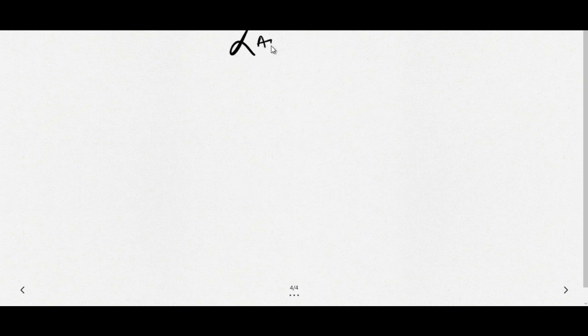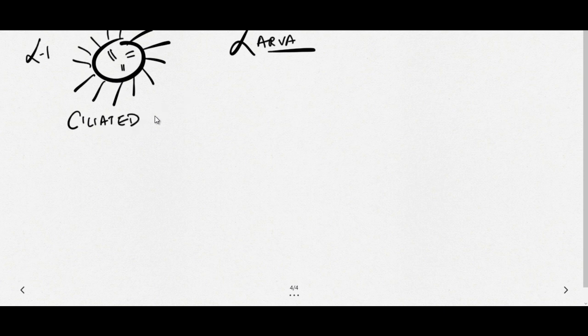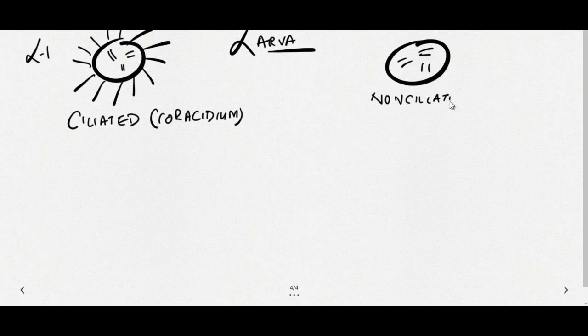Now if we talk about larval forms, that means baby worms, then what are the different larval forms that we can see? In case of Pseudophyllidean cestode, the first larval stage is a ciliated embryo with three pairs of hooks, that is total six hooklets. So this is known as ciliated or Coracidium, also known as the ciliated embryo or ciliated larva. And the Oncosphere which is released from Cyclophyllidean cestode, it is usually non-ciliated having six hooks or three pairs of hooklets.